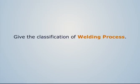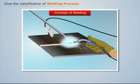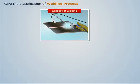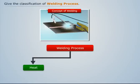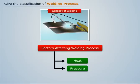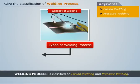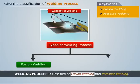We have studied how to join two metal plates through welding. To join two metal plates, heat and pressure are applied wherever necessary. Thus, heat and pressure are the two factors on which welding of metal depends. On the basis of these two factors, the welding process can be classified as fusion welding and pressure welding.